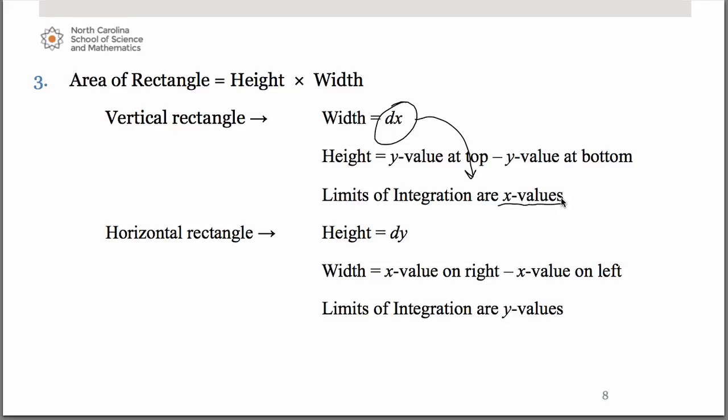Now once in a while, you'll run into a problem where you have a horizontal oriented rectangle that's going left to right, and maybe it's hitting one curve on the left, another curve on the right. In that case, you have a dy problem. The reason is the width is going up and down, so it's a delta y this time.